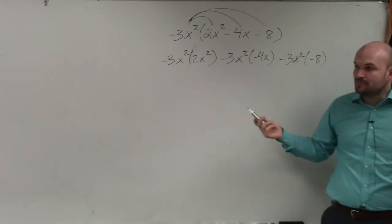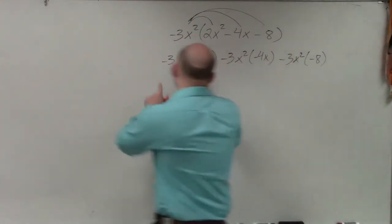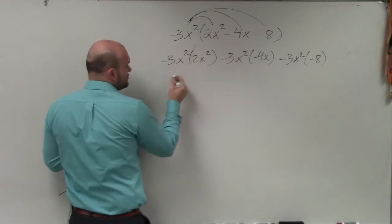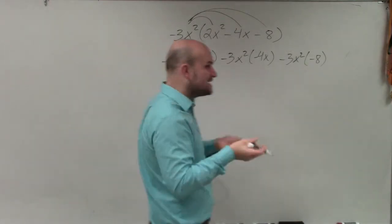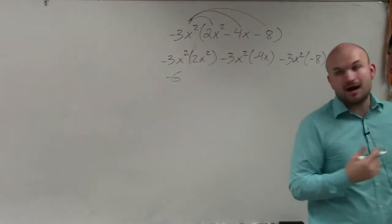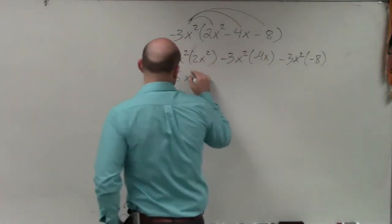So when we multiply, remember, just like we were talking about scientific notation, we multiply our coefficients, which would be negative 6, and then x squared times x squared - remember, we add the powers. So this becomes x to the fourth.